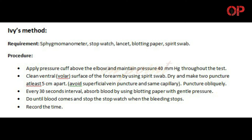Procedure: Apply pressure cuff above the elbow and maintain pressure at 40 mmHg throughout the test. Clean the ventral volar surface of the forearm using a spirit swab. Dry and make two punctures at least 5 cm apart. Avoid superficial vein puncture and the same capillary. Puncture obliquely. Every 30 seconds, absorb blood using blotting paper with gentle pressure. Continue until bleeding stops, then stop the stopwatch and record the time.